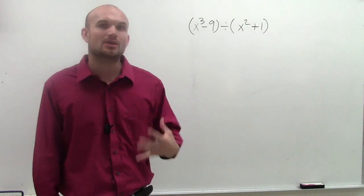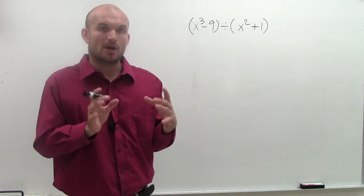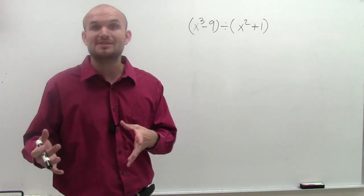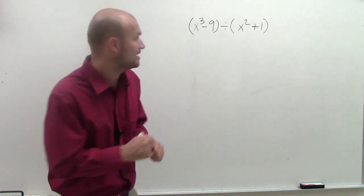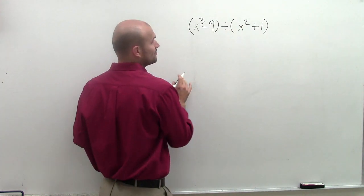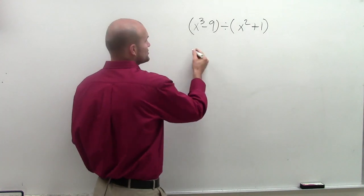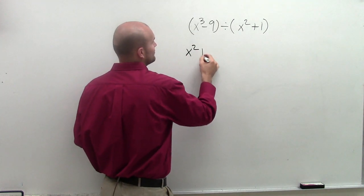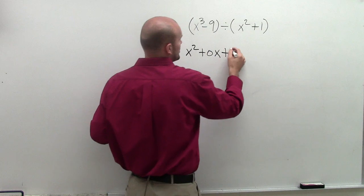And when using long division, we've got to make sure that we put our 0 for our coefficients for our placeholders of the variables that we don't have. So for instance, I have x squared plus 1. I do not have a linear term. So I'm going to write this as x squared plus 0x plus 1